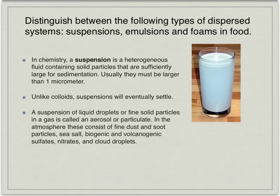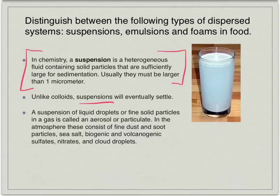We have different dispersed systems to talk about. The first one is a suspension. A suspension is a unique dispersed system because it is heterogeneous — you can see that there are different particles in there, and they are large enough that over time they are going to settle out. There will be sedimentation in a suspension. They usually have to be bigger than one micrometer, but the key point is suspensions are heterogeneous and will eventually settle, unlike colloids.